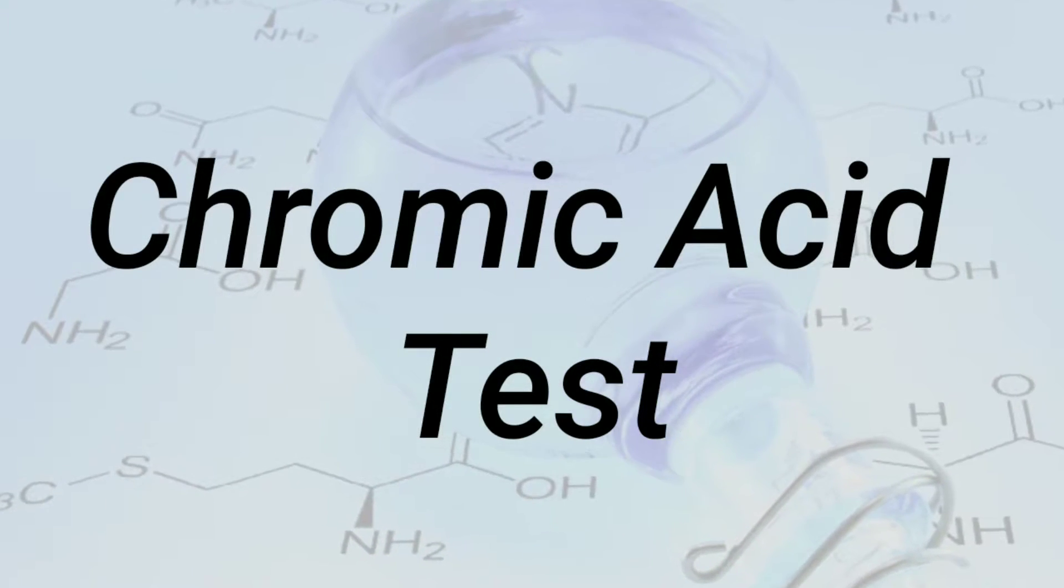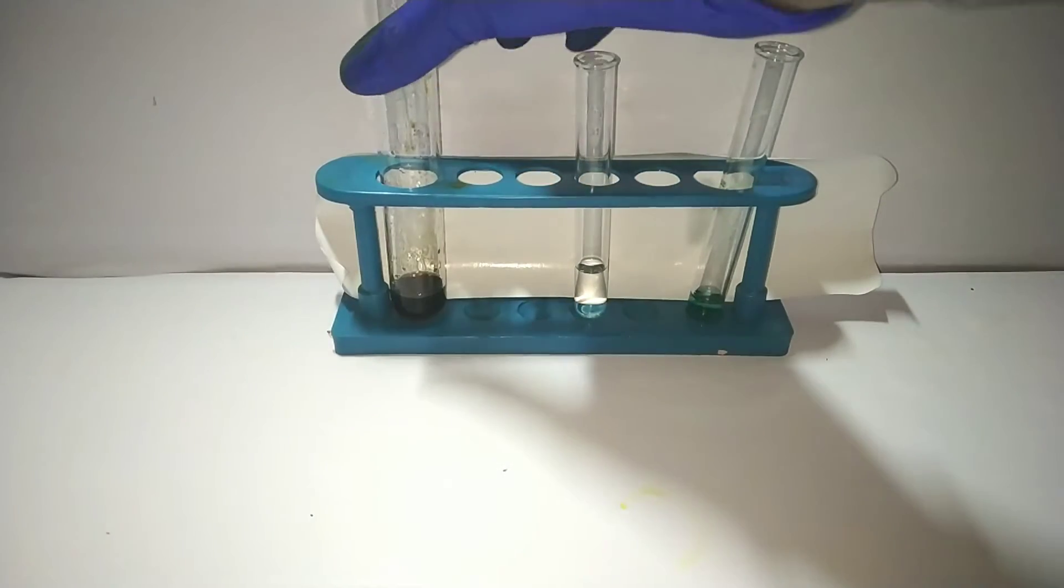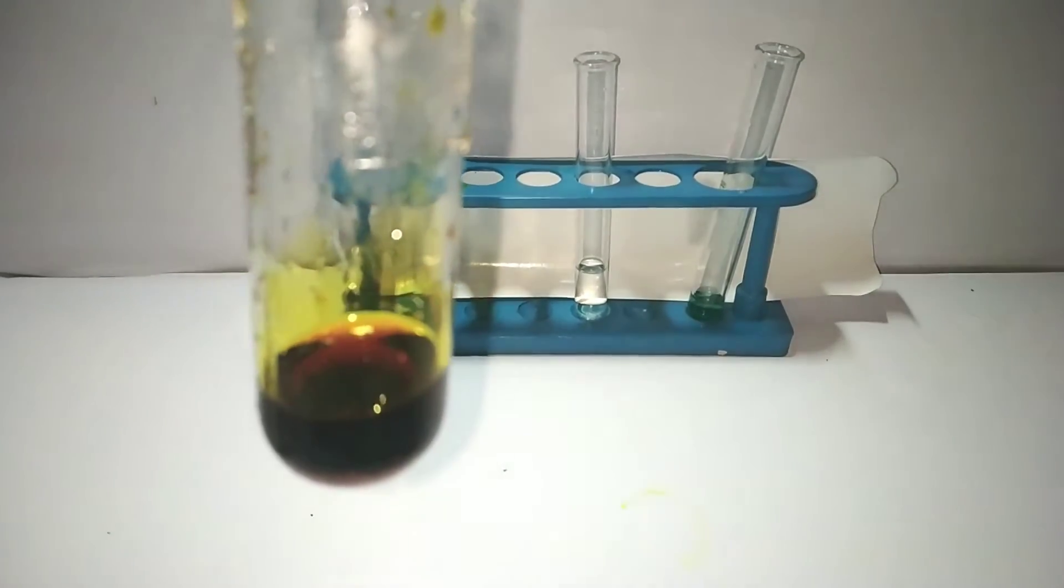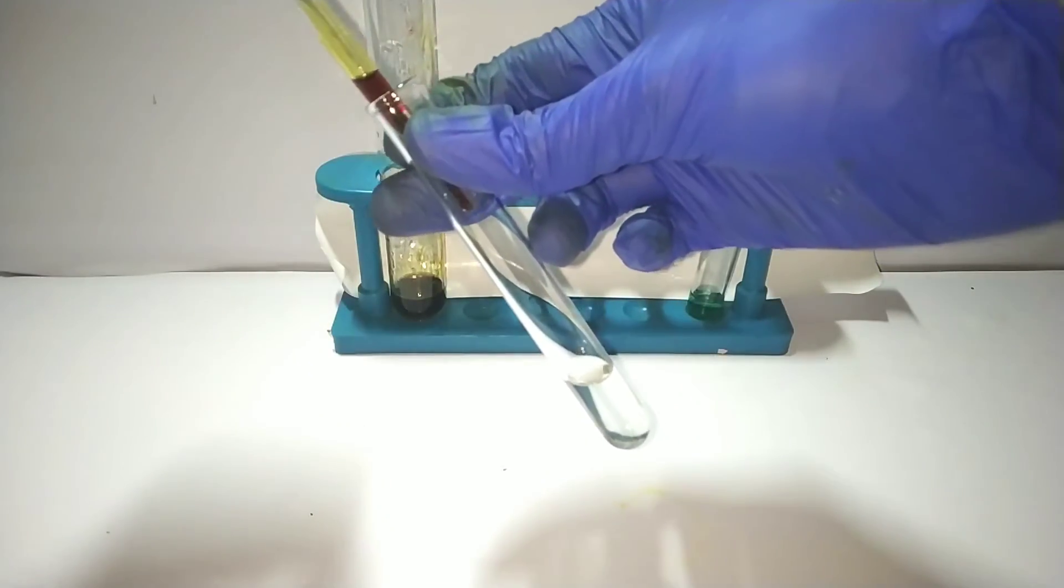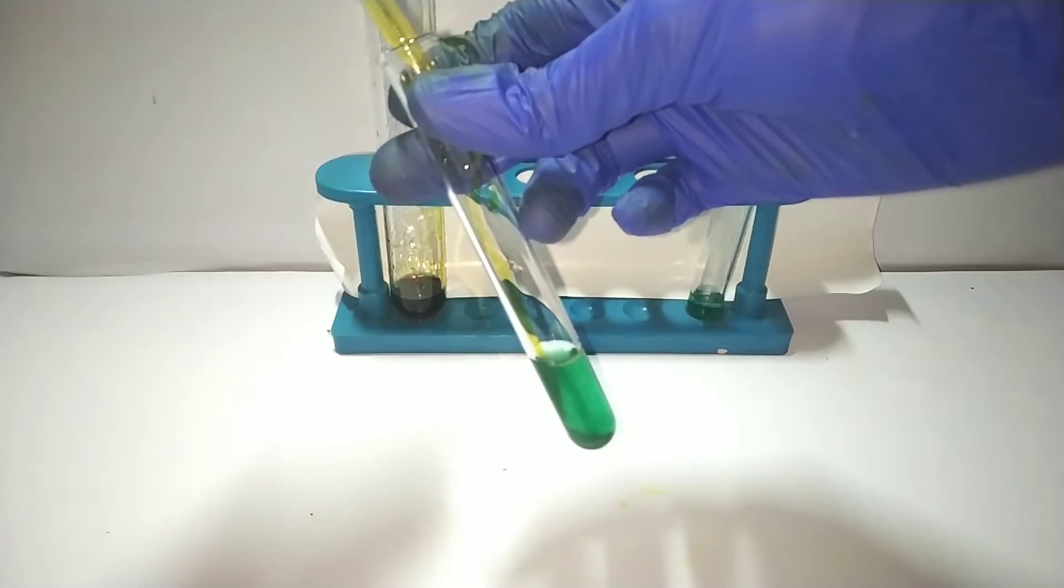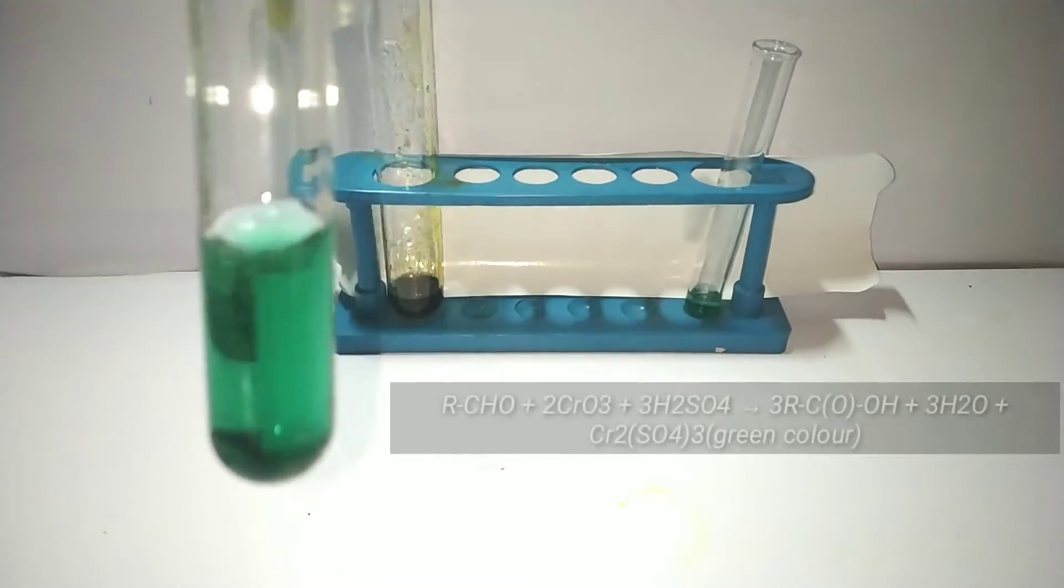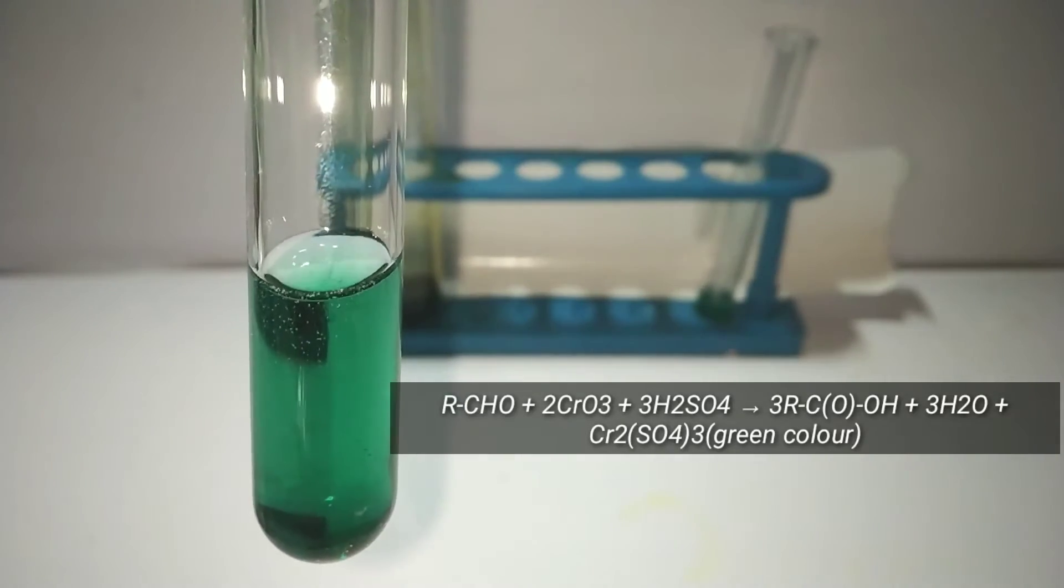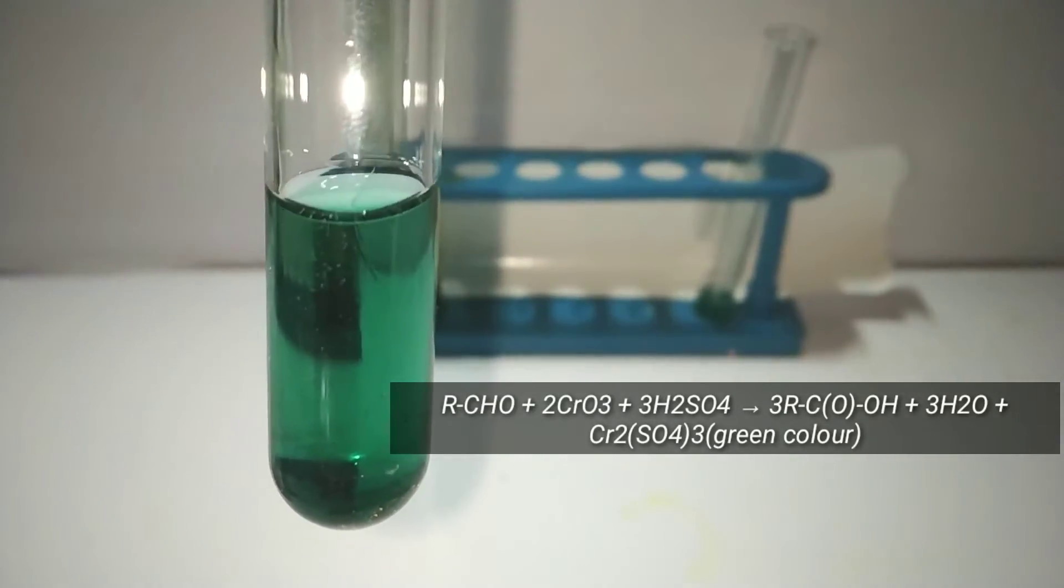Chromic acid test. This is another test specific to aldehydes. Chromic acid reagent was prepared by adding about 2 ml of concentrated sulfuric acid to 0.5 g of potassium dichromate. The resultant solution will be deep red in color. Now let us do the test. A few amount of chromic acid reagent was taken with a glass dropper and was transferred to a test tube containing the organic compound. Appearance of a green color is observed. What's happening here is chromic acid, being a powerful oxidizing agent, oxidizes the aldehyde to the carboxylic acid and in turn reduces to chromium 3 plus, which reacts with the sulfate ion to form chromium 3 sulfate, which is the green color.